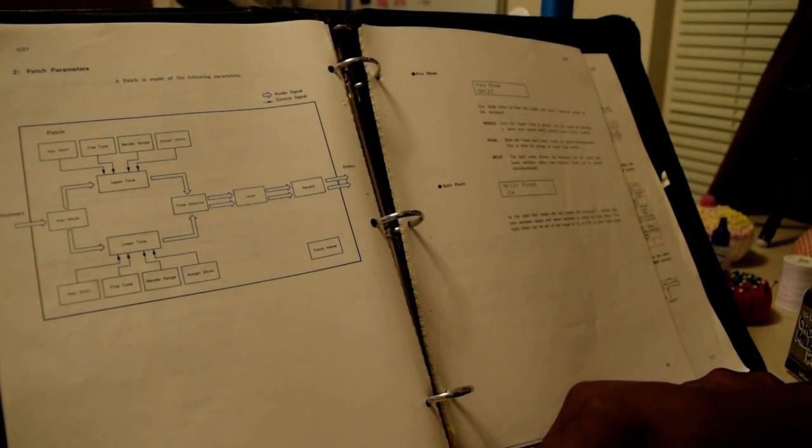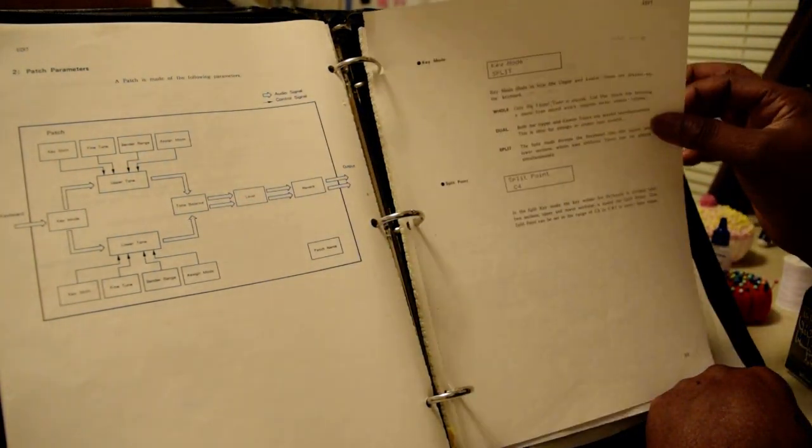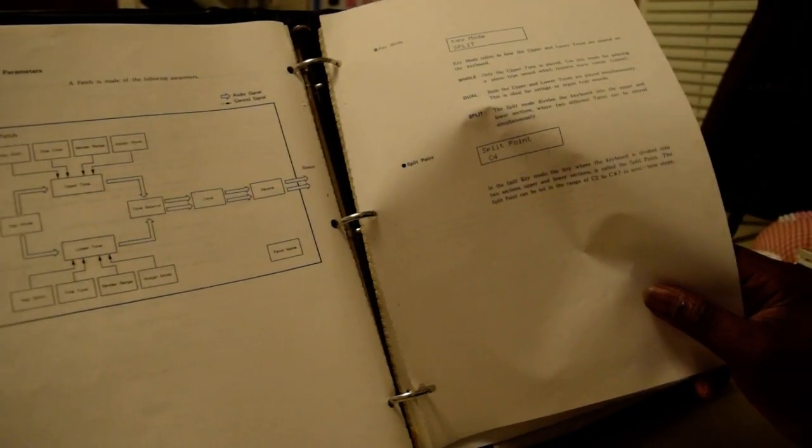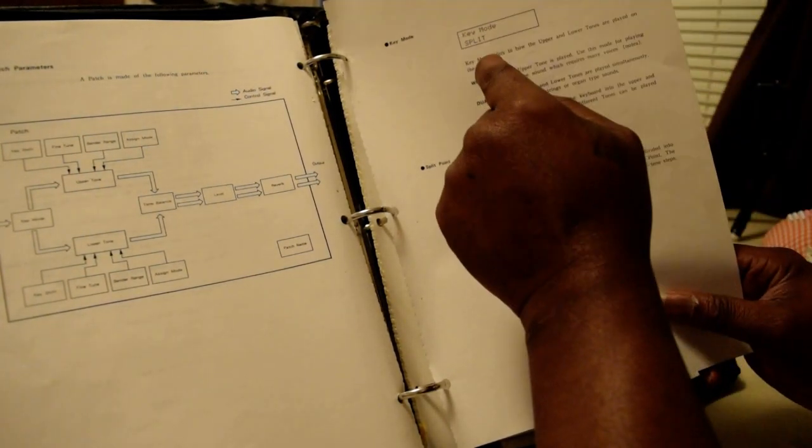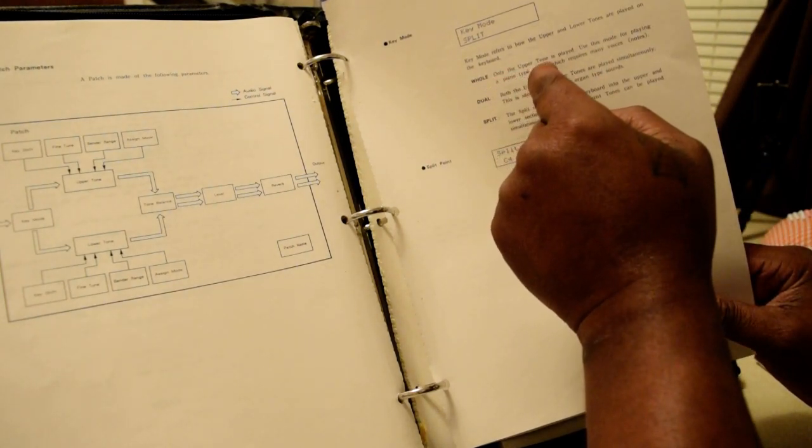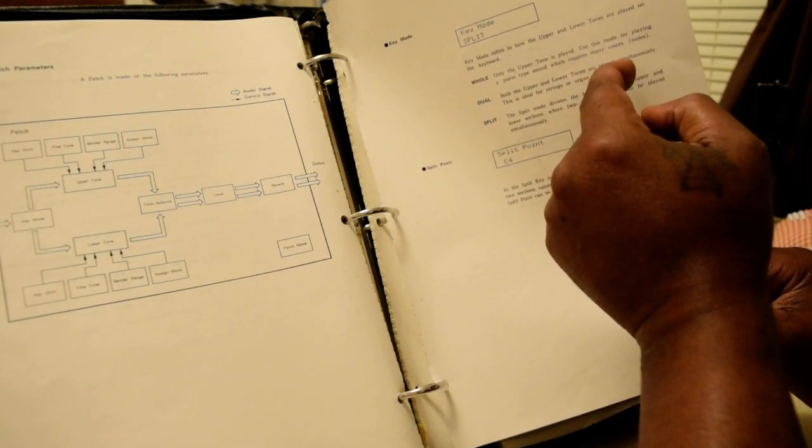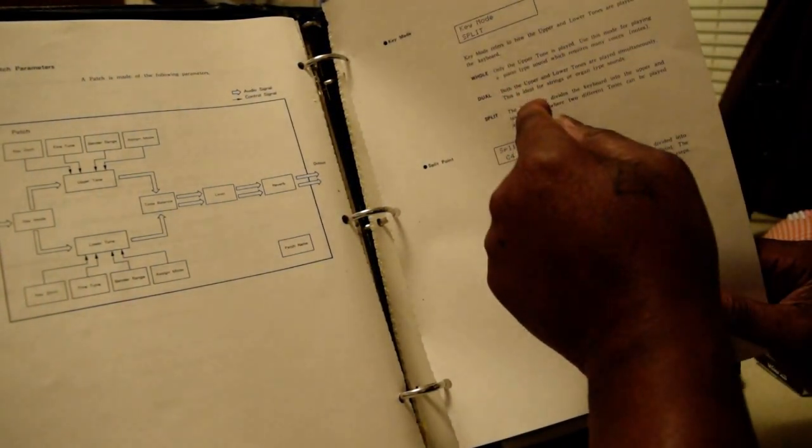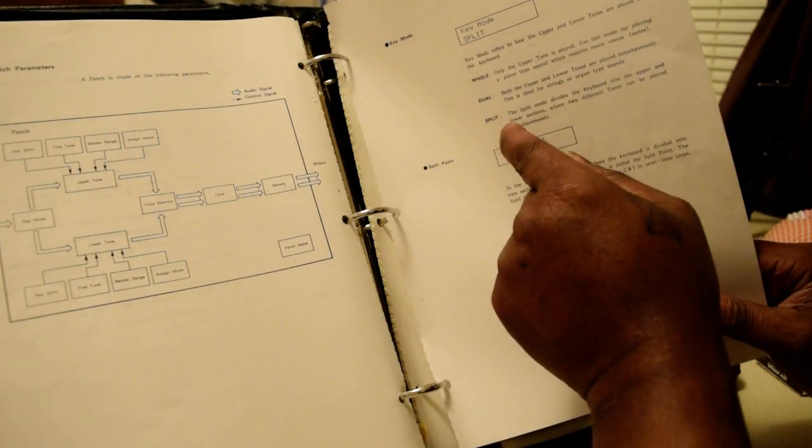Over here on this page it says key mode split. Key mode refers to how the upper and lower tones are played on the keyboard. If you have it in whole, only the upper tone is played, using this mode for playing piano type sounds which requires many voices. Dual: both the upper and lower tones are played simultaneously. This is ideal for strings or organ type sounds. Split: the split mode divides the keyboard into upper and lower sections where two different tones can be played simultaneously.